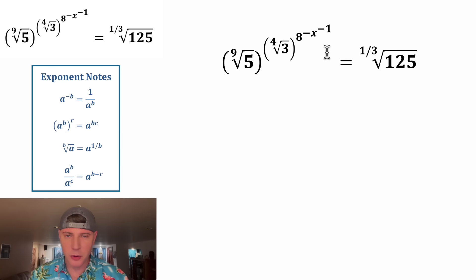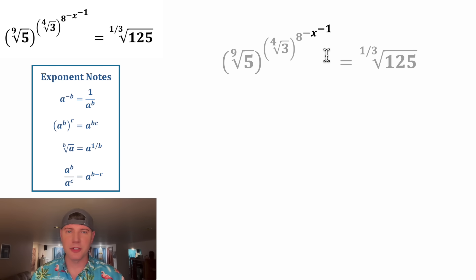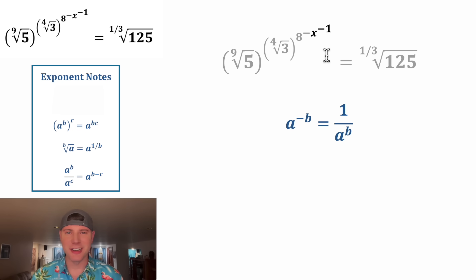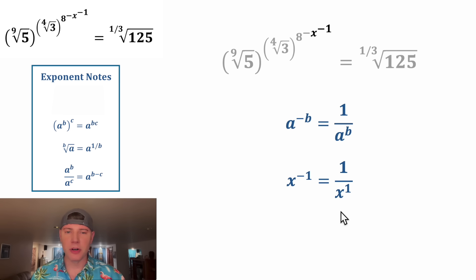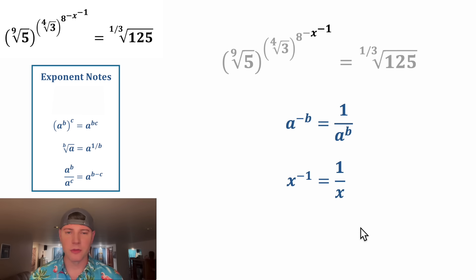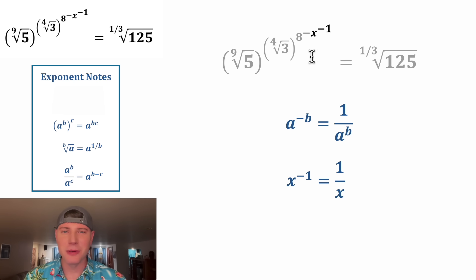We're going to focus on x to the negative one first. X to the negative one power will equal one over x to the positive one power, and that's the same thing as one over x. So we can change this up here to one over x.